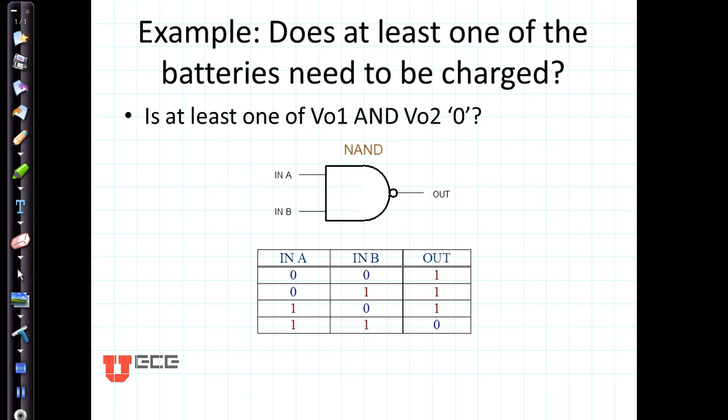Now I could ask the question, does at least one of my batteries need to be charged? I could bring in the voltage from either of my battery testing circuits, and I would see if I have zero and zero, they both need to be charged. Yep, need charging there. This one needs to be charged, this one doesn't, but yep, I still need to get out my charger. This one's charged, that one's not. Get out your charger again. Charged and charged? No, I don't need my charger. This is called a NAND gate, N for NOT AND.